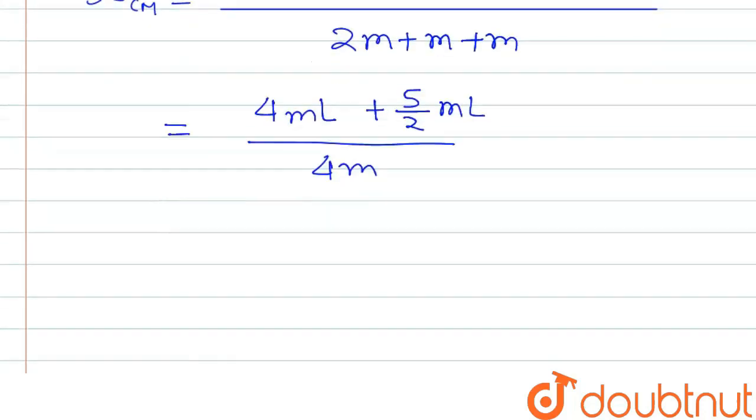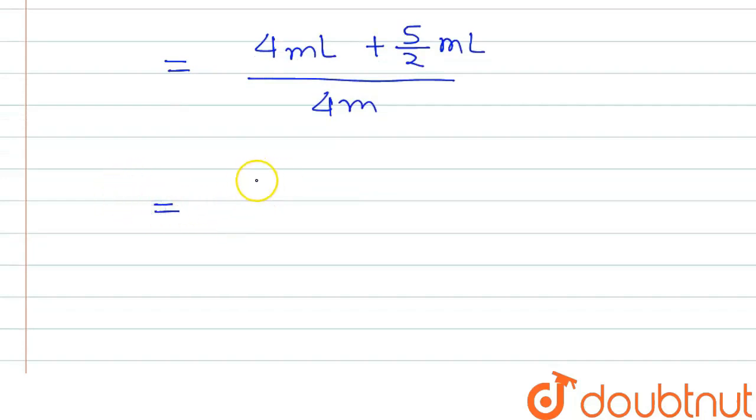If we solve this we will get 13M into L divided by 8M. Here M and M both will be cancelled out, so this will be 13 by 8L. This is the position of center of mass for x component.